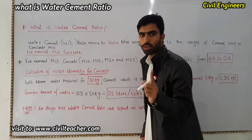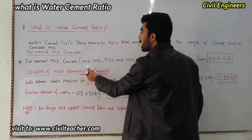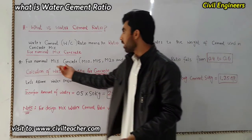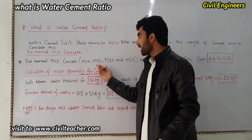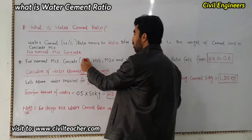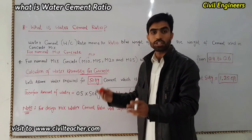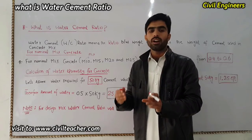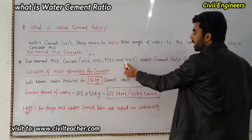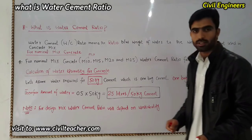For nominal mix concrete, keep this point in mind. Nominal mix concrete includes M10, M15, M20, and M25 — these are the grades of concrete. The number represents the characteristic compressive strength of concrete after 28 days. For nominal mix concrete M10, M15, M20, and M25, the water-cement ratio falls from 0.4 to 0.6.